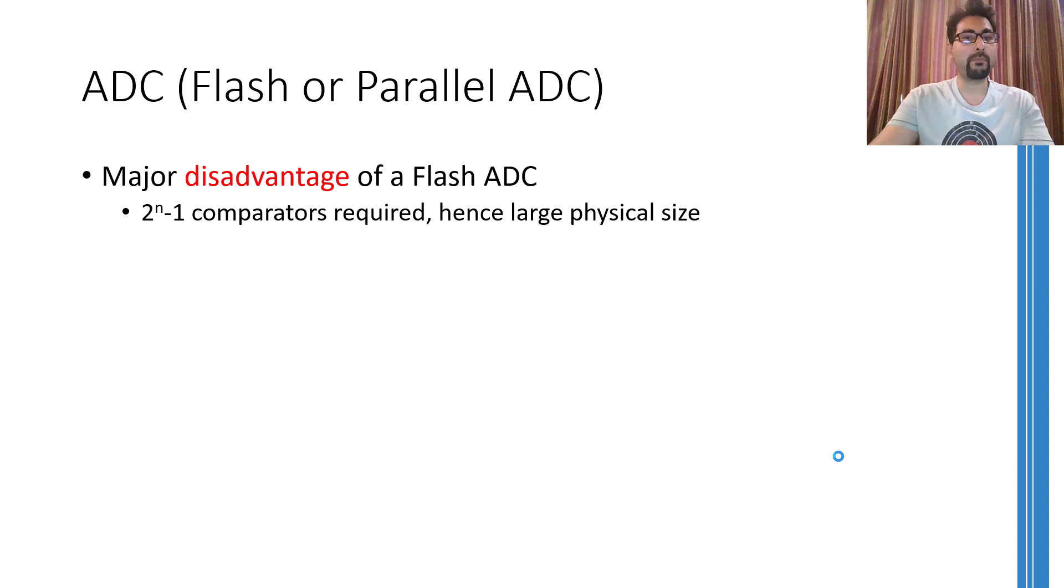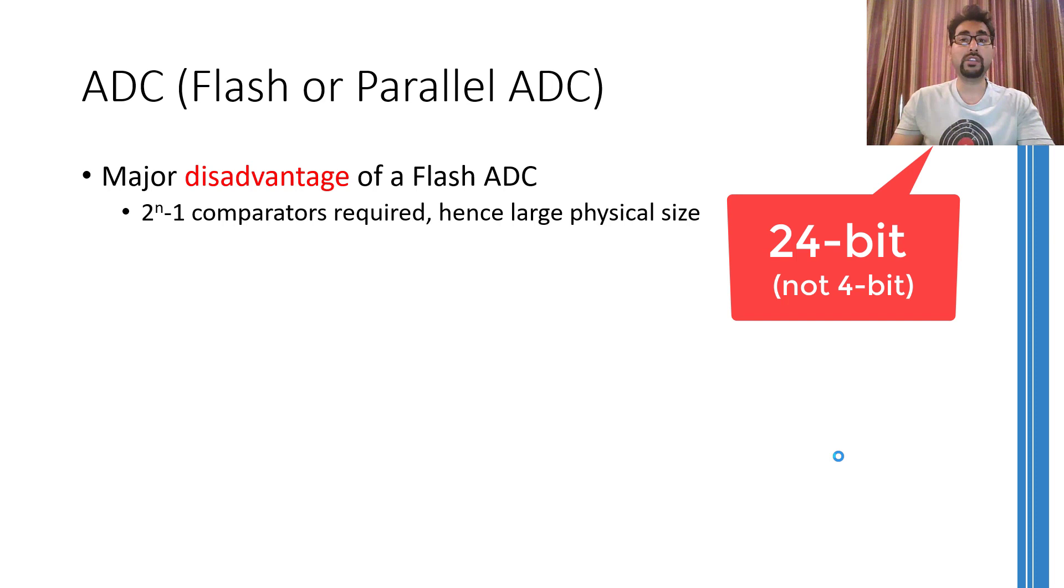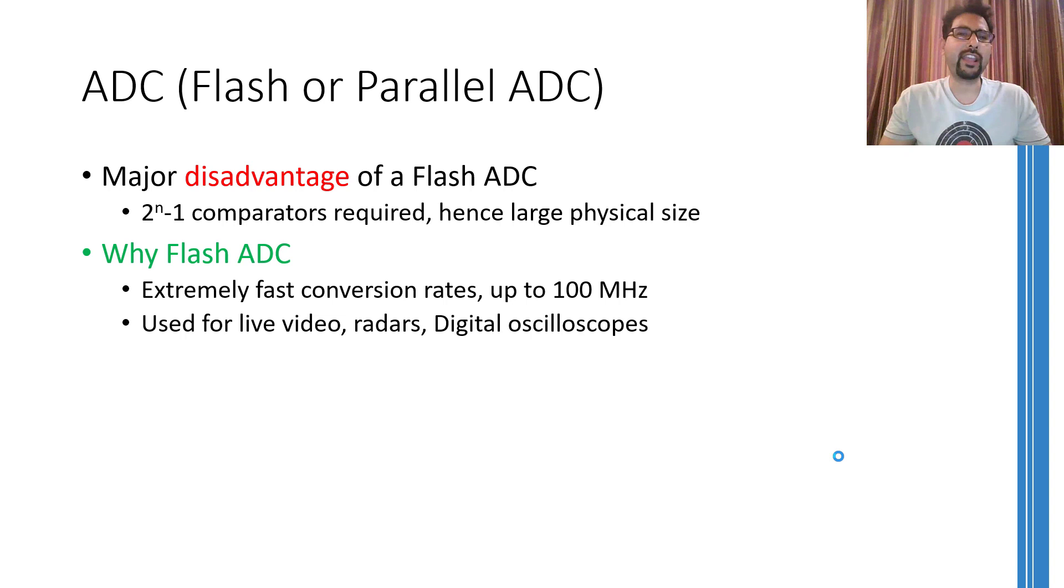So can you figure out the number of comparators required for implementing a 4-bit flash ADC? Surely the number is going to be huge. On the contrary, these ADCs truly work like a flash. They require only one clock pulse to perform the conversion.